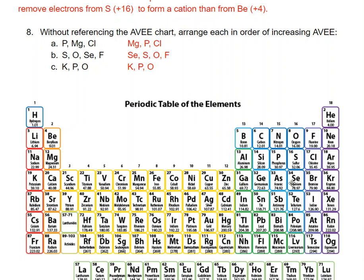For the next set — Se, F, O, and S — between oxygen and fluorine, fluorine has a higher AVEE because its nucleus is more positive. Looking at oxygen, sulfur, and selenium, we're comparing different numbers of energy levels. For the last set — potassium, phosphorus, and oxygen — potassium will have the lowest AVEE because it has the most shells, and oxygen has the fewest shells, so it will have the highest AVEE.